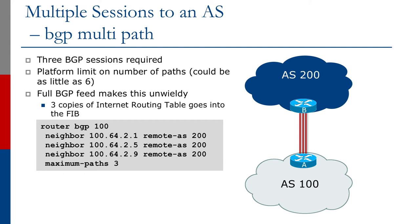The second example for handling multiple parallel connections between a local router and a peer's router is BGP Multipath. When this first appeared it was extremely useful — the internet routing table was quite small and this was a good solution for getting enough bandwidth between adjacent networks. In this example, AS100 and AS200 again have three parallel links between router A and router B. What we do is set up three BGP sessions, one on each point-to-point link, and then turn on a BGP option called maximum paths.